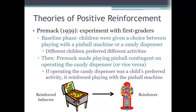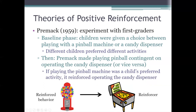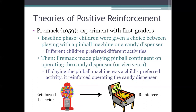Then in the second phase, the pinball players and the candy eaters were each subdivided into two groups. One group had to play with the pinball machine first before being allowed to operate the candy machine, and the other group had to operate the candy machine first before they could play pinball. For kids who had preferred the pinball machine, they ate more candy when that's what they had to do to get access to the pinball machine. And for kids who had preferred the candy machine, they played more pinball when that's what they had to do to get access to the candy machine.